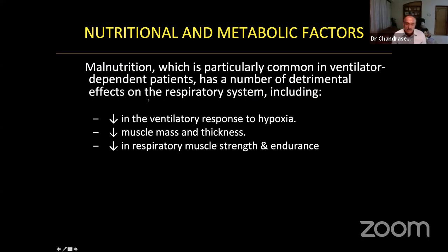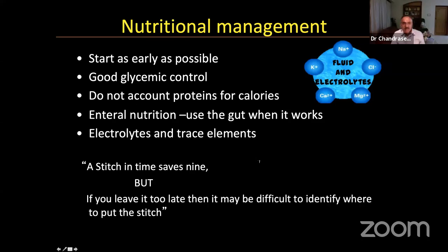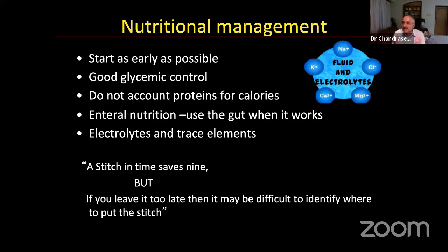Nutritional management: malnutrition decreases ventilator response to hypoxia, decreases muscle mass and thickness, and decreases muscle strength and endurance. Start early, maintain good glycemic control, do not consider protein as calories, manage fluids and electrolytes, use enteral nutrition whenever the gut works, and replenish electrolytes and trace elements. Nutrition cannot be corrected acutely — giving albumin infusions does not correct malnutrition. Building protein and increasing albumin production takes weeks. Early initiation is essential.